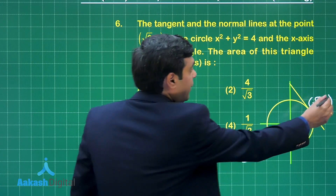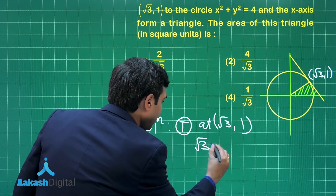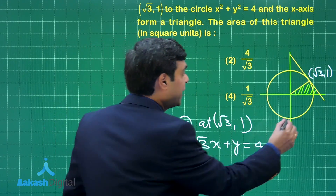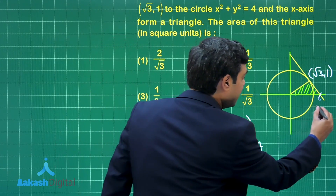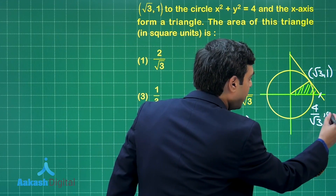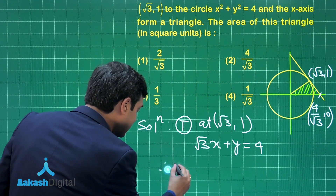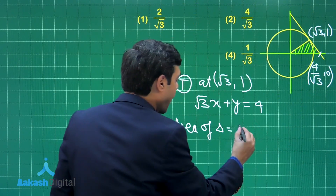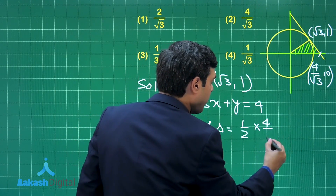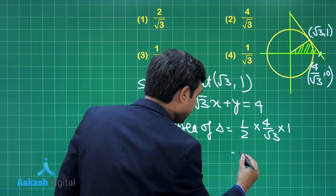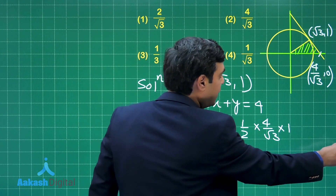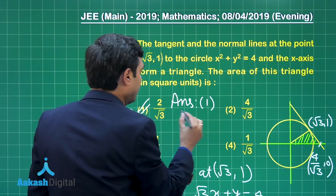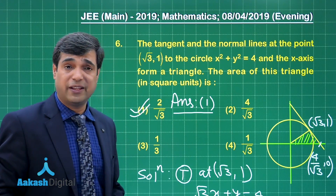The equation of the tangent at (√3, 1) is simply √3·x + y = 4. Finding where the tangent meets the x-axis by substituting y = 0 gives the point (4/√3, 0). The area of the triangle is ½ × base × height = ½ × (4/√3) × 1 = 2/√3 square units. From the given options, 2/√3, that is option number 1, is the correct answer.